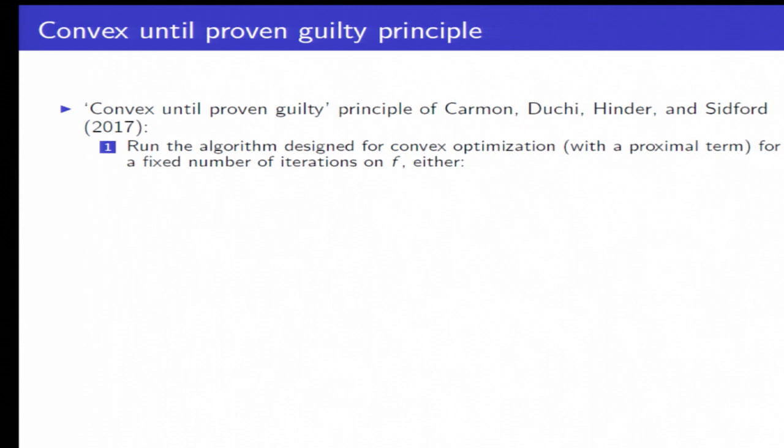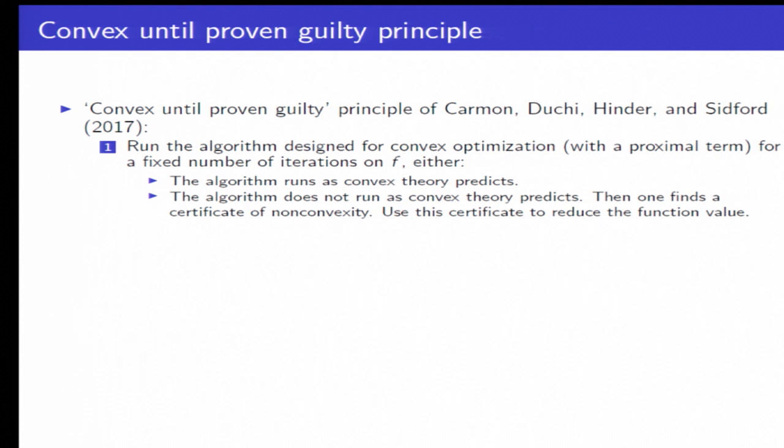So in order to get around this issue, we use what's called the convex until proven guilty principle. So this is an idea that Yair, John, myself, and Aaron had originally in the context of accelerated gradient descent. So, in particular, you run an algorithm designed for convex optimization for a fixed number of iterations on the function f. And either the algorithm runs as the convex theory predicts or the algorithm does not run as the convex theory predicts. And then if one can obtain a certificate of non-convexity somehow, we can use this certificate to reduce the function value. And then if we find a stationary point, then we terminate, otherwise we return to step one.